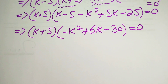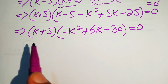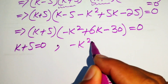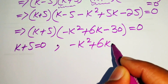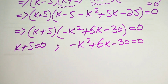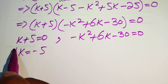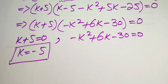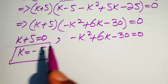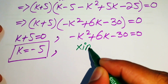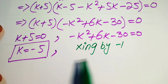We have two cases. Case 1: k plus 5 equals 0, giving k equals minus 5 — the first real root. Case 2: minus k squared plus 6k minus 30 equals 0. To find the other roots, we solve this quadratic. We multiply both sides by minus 1 to convert it to standard form.